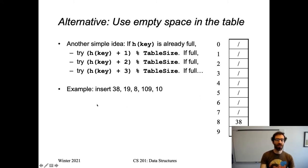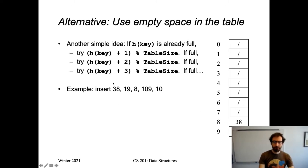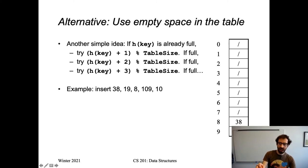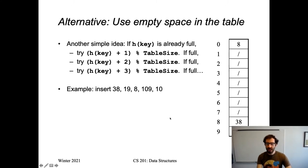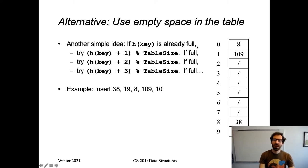Here's an example: we insert 38 in a table of size 10. 38 mod 10 puts it at 8. 19 mod 10 puts it at 9. 8 mod 10 is 8, which is full, so we add one to try 9 — that's full — so we try 10 mod 10 which is 0, that's open, so we put 8 there. 109 mod 10 is 9, that's full, so we try the next spot, also full, and 109 eventually gets put at index 1. Then 10 mod 10 is 0, that's full, so we try the next spot until we find an open one.